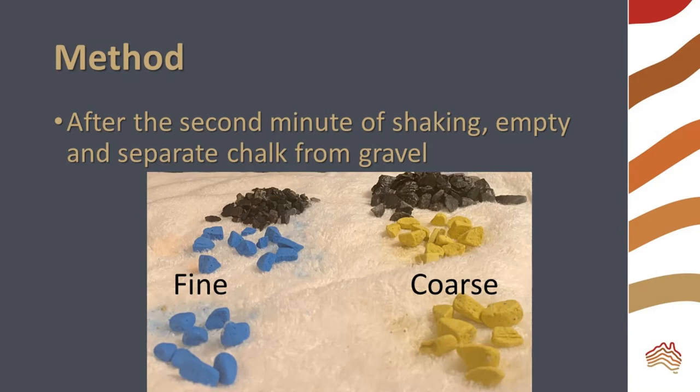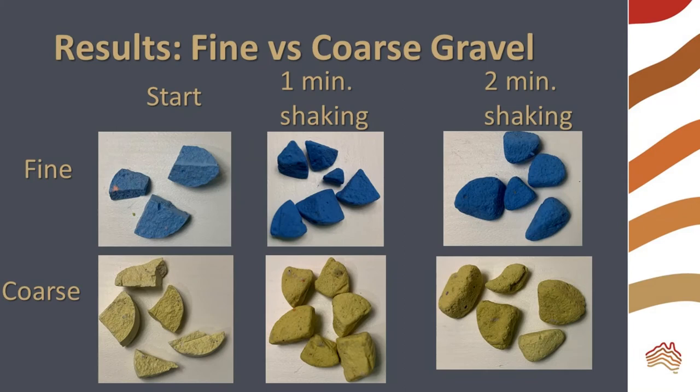You should now have three different stages of the chalk: the original, the one-minute, and the two-minute products. Do you notice any trends with increased time of shaking? Look at the edges of the chalk to see if they are becoming rounded.